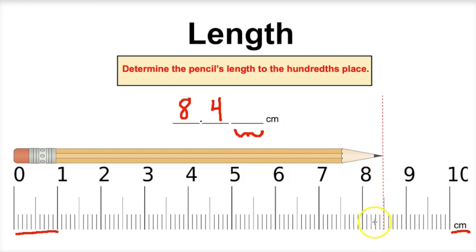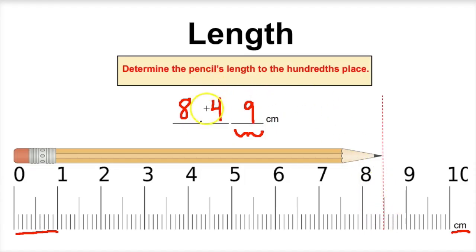So if we take a look, it's 8.1, 8.2, 8.3, 8.4, and it's not quite 8.5. If we take a look at this red dotted line here, it's barely before the halfway mark. So we're going to call this a 9. It's almost touching this right here. So if we want to determine the pencil's length using the hundredths place, we would say that this is 8.49 centimeters. The 8 and the 4 are measurements that are 100% certain, and the 9 has a little bit of uncertainty — we had to estimate.